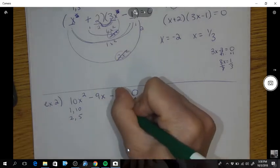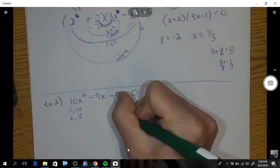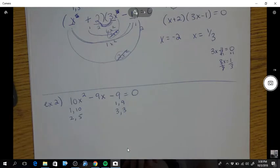And we're going to list combinations of multiples here. 1, 9, 3, and 3.